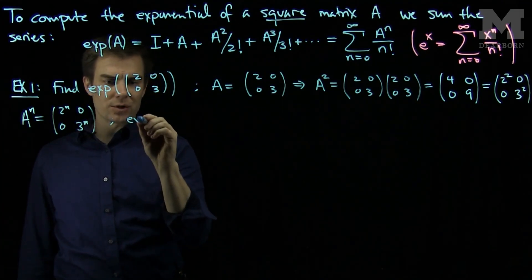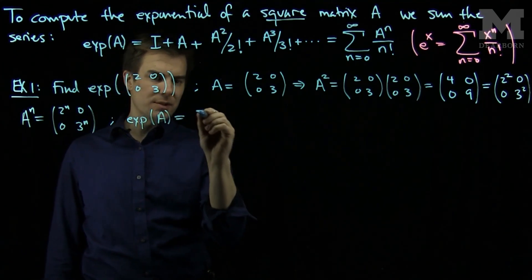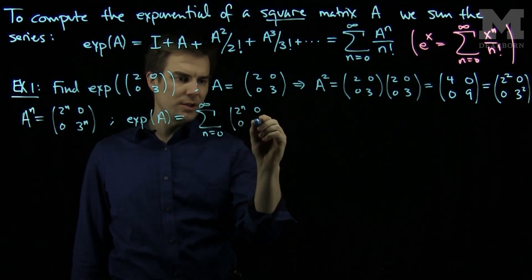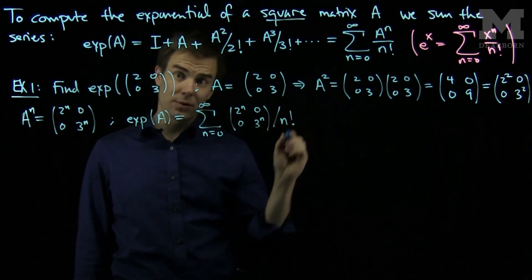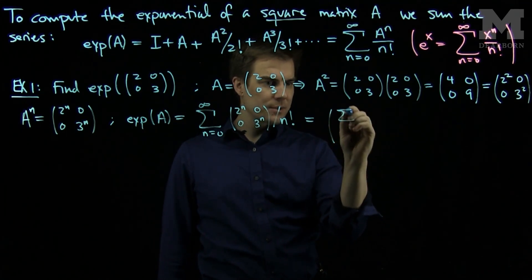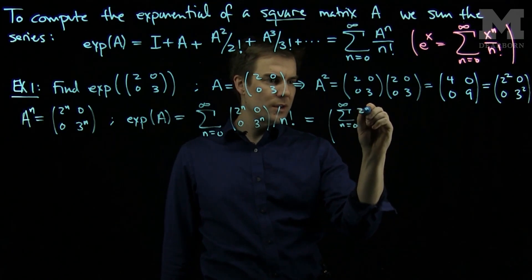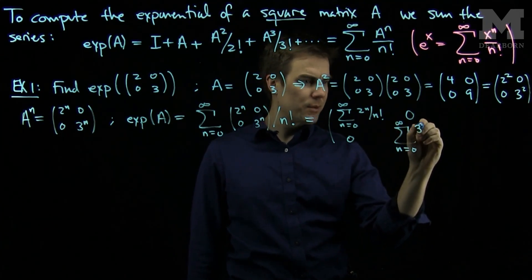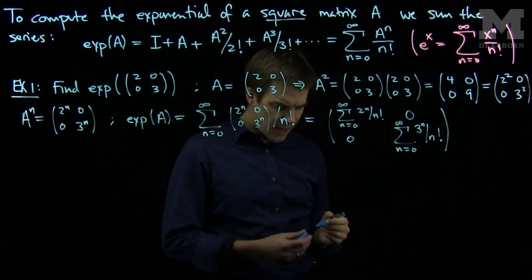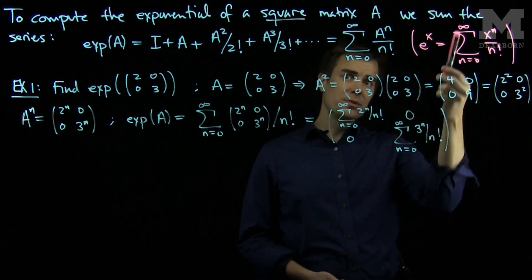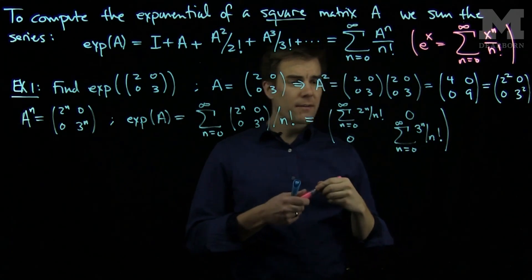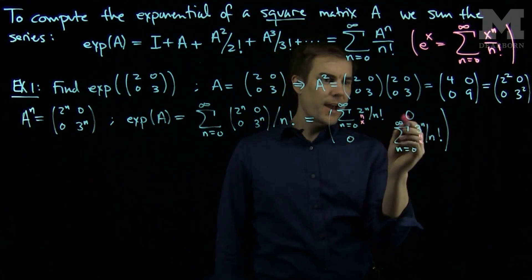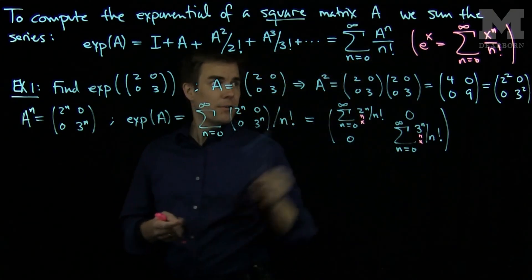Using this, I now see that the exponential of matrix A is going to be the sum n goes from 0 to infinity of these matrices [2 to the n, 0, 0, 3 to the n], with every entry divided by n factorial. What I am doing is looking at the matrix of all these sums: the sum n goes from 0 to infinity of 2 to the n over n factorial, 0, 0, and the sum n goes from 0 to infinity of 3 to the n over n factorial. Now we pause and look at the definition of e to the x — e to the x is the sum from 0 to infinity of x to the n over n factorial. What I have here is 2 to the n over n factorial, so the 2 is going to be my x. And over here the 3 is going to be my x. If I add up a whole bunch of 0's I just get 0.